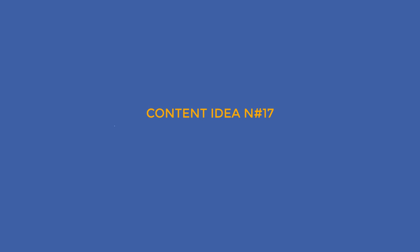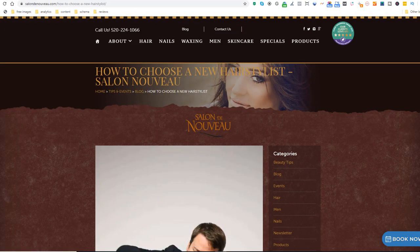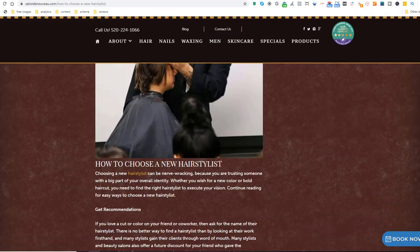Content idea number 17: how to choose a business like yours. I like this idea because you position yourself as an impartial judge by giving recommendations on how to choose a business like yours, just like this hair salon. Obviously you're not impartial at all and you want visitors to choose you, but it shows you're confident that you're probably the better choice.